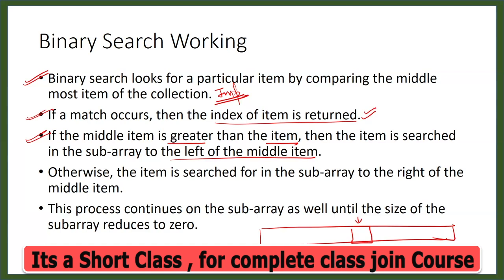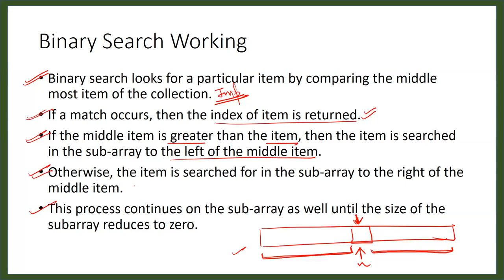If the middle term is greater than what we are trying to find, we look in the left subarray. If it is smaller, we look in the right subarray. This process continues on the subarray as well until the size of the subarray reduces to zero — we keep searching until we find the item or there is nothing left.